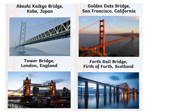Then we have Tower Bridge — you might recognise this one. This one is in London. You will notice it has two rather decorative towers. Are those towers just for show or are they there for a purpose? And the last one in this picture is the Forth Rail Bridge in Firth of Forth, Scotland. What do you notice about this bridge that is different to the others?